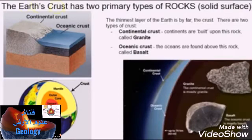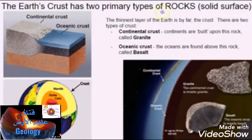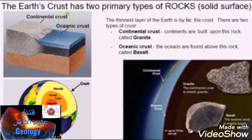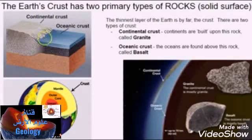Before we talk about the minerals, let's define what we're looking at. We're looking at the rocks of the earth's crust. The earth's crust has two primary types of rocks within its solid surface: continental crust, which we'll call granite, and oceanic crust, which we'll call basalt.